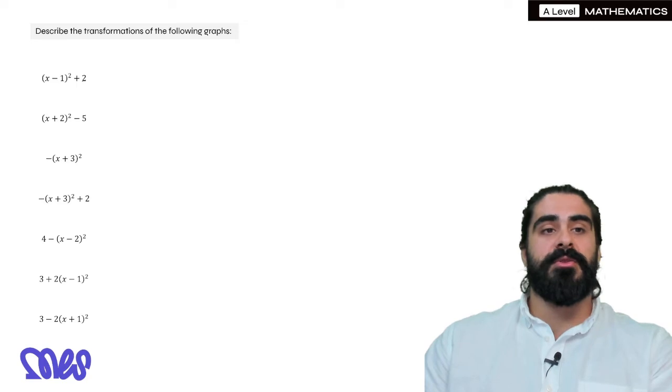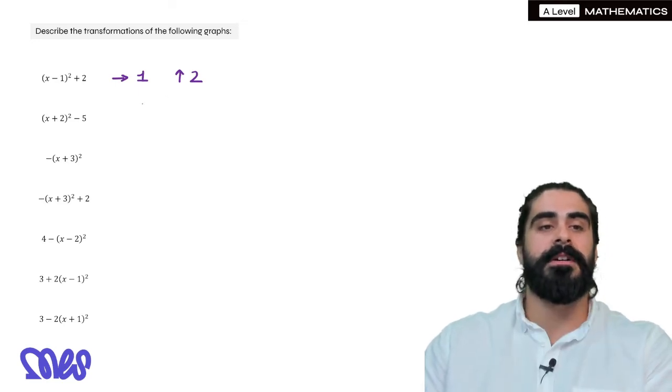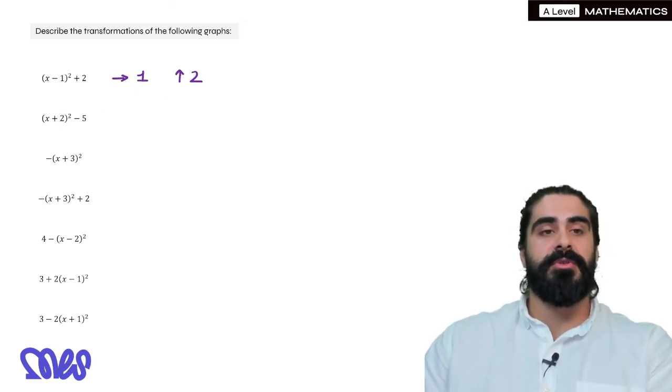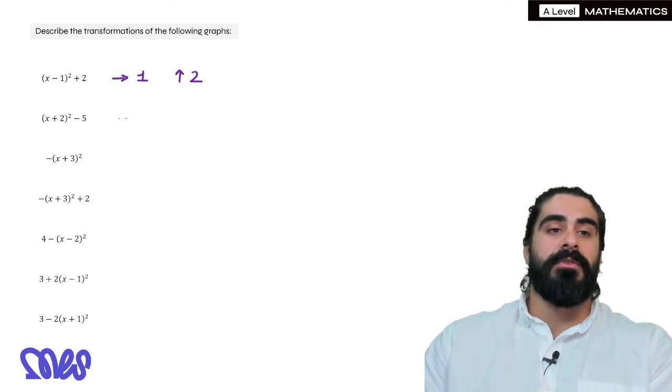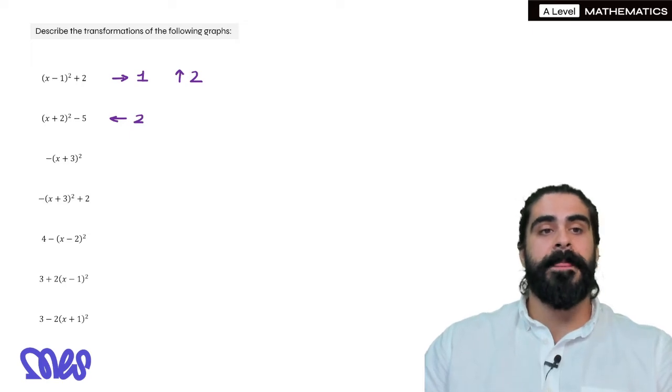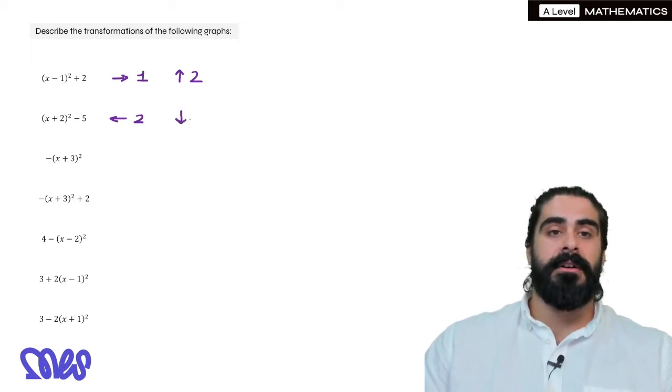So (x-1)²+2: The x-1 means that we'll be moving the graph to the right by 1 and then up by 2. We always want to address the inputs first. (x+2)²-5: So the x+2 will shift the graph to the left by 2, it's doing the opposite remember, and then the -5 does as it says, we're going to move down by 5.